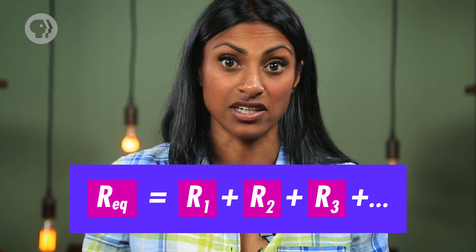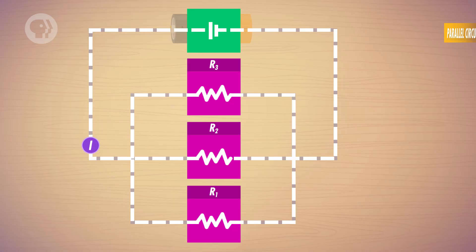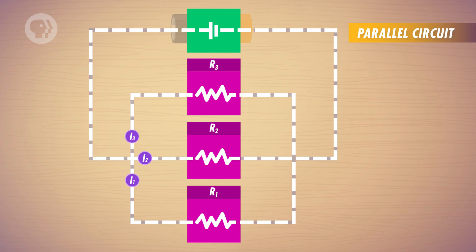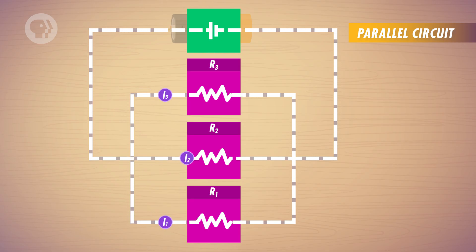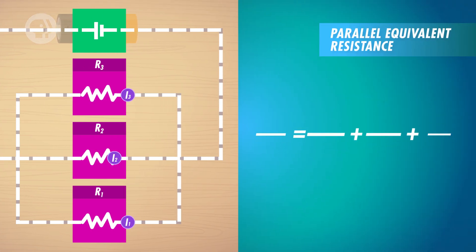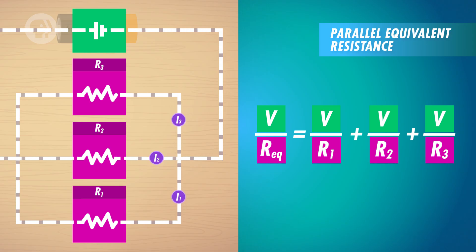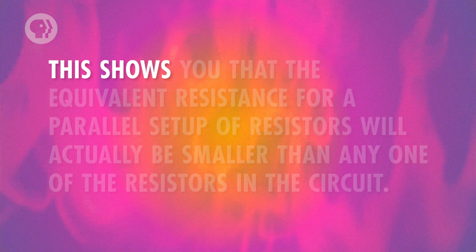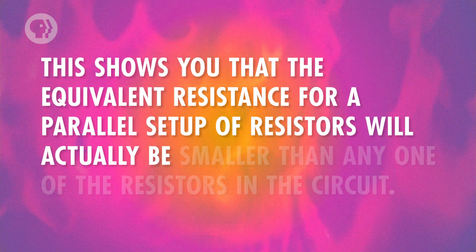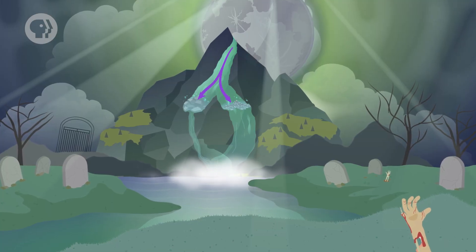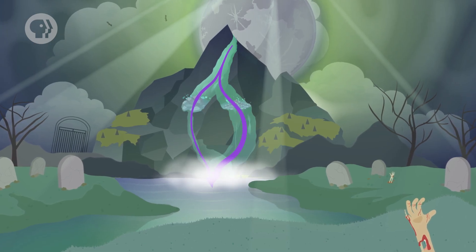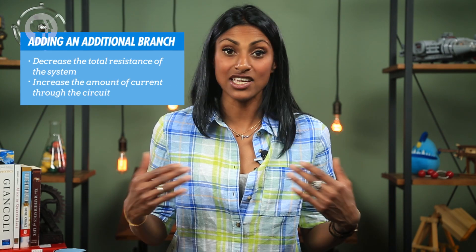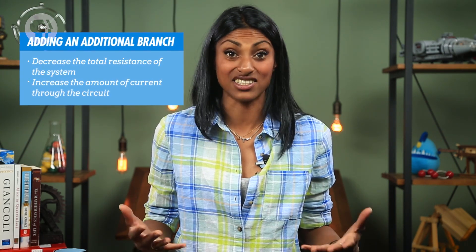Remember how you add up all the resistances to find an equivalent resistance for resistors in a series? Would the same be true for a parallel setup? Conservation of charge says that the current in the wire before the split junction equals the current coming out. So if we've got three branches, the current goes in three directions. We can substitute Ohm's law for each current to get an equation in terms of voltage and resistance. And since the voltage for each resistor is the same in parallel, you can cancel the voltage term out of the entire equation, and we're left with the equation for parallel equivalent resistance. This shows that the equivalent resistance for a parallel setup of resistors will actually be smaller than any one of the resistors in the circuit. Any additional branch will serve to decrease the total resistance of the system and increase the amount of current through the entire circuit.